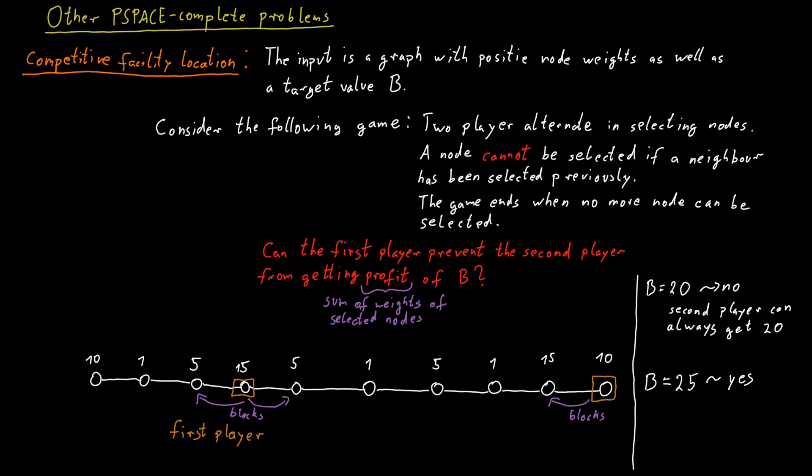The total weight of all the vertices that the first player has not picked or blocked because they're neighbors of a vertex that the first player picked is now only 18. So the second player can't possibly get to a value of 25.